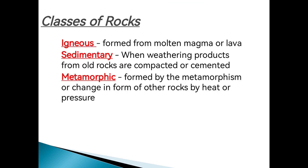Now we go to the different kinds and classes of rocks. We have three classes of rocks: the igneous, sedimentary, and metamorphic rocks. Igneous rocks are formed from molten magma or lava which come from volcanoes. Sedimentary rocks are formed when weathering products from old rocks are compacted or cemented. And metamorphic rocks are formed by the metamorphism — or change in form — of other rocks due to heat or pressure.